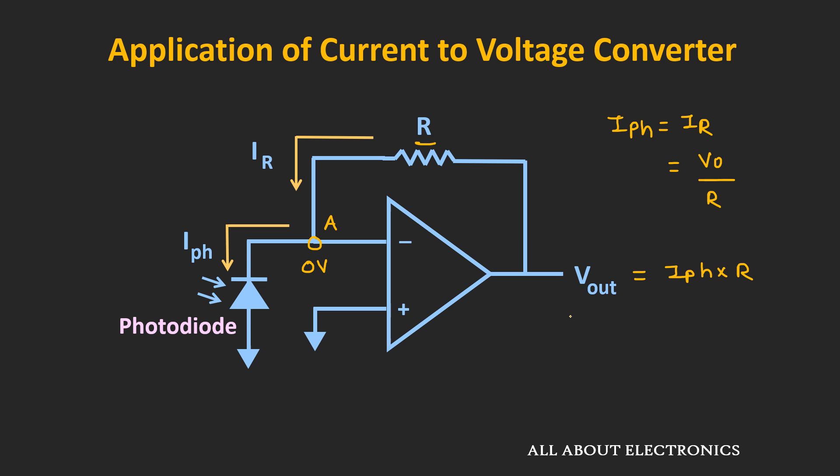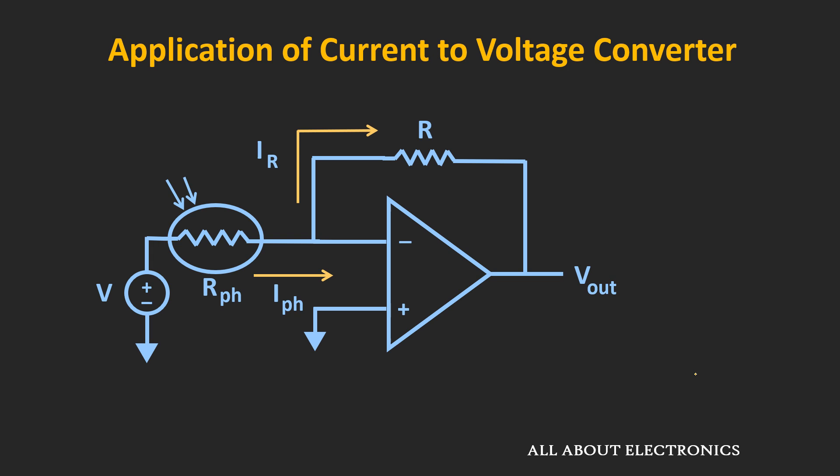Similarly, this current-to-voltage converter can also be used along with a photoresistor. In the case of a photoresistor, the value of resistance changes according to the light falling on it.